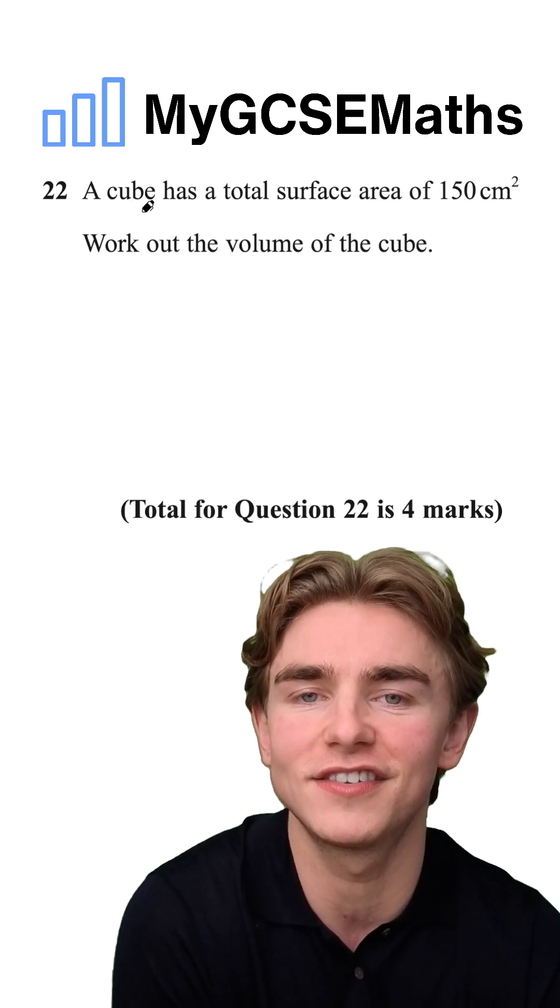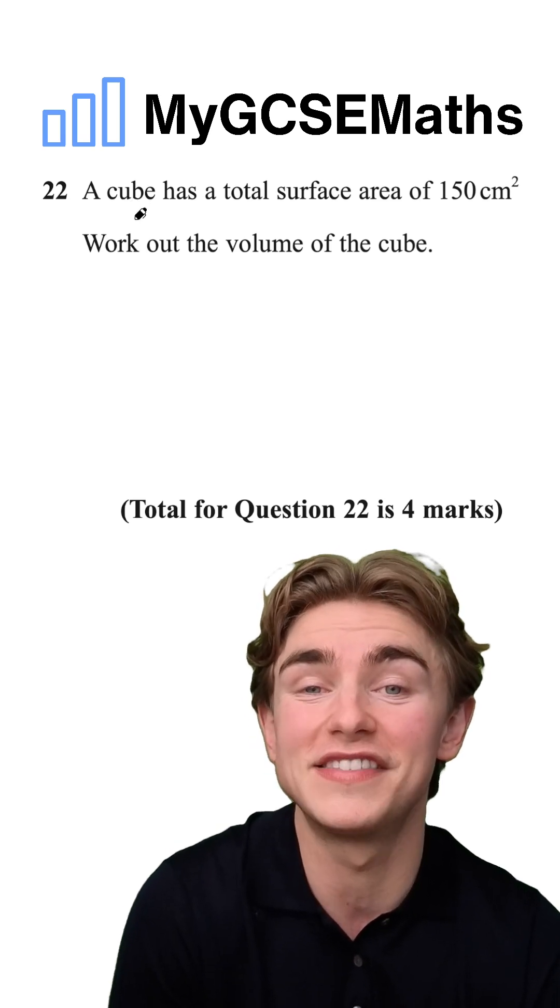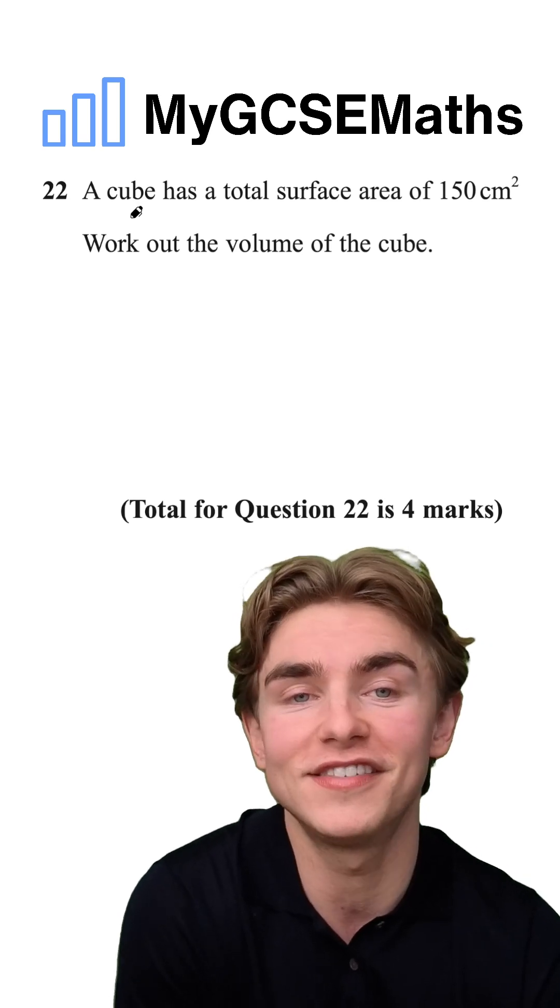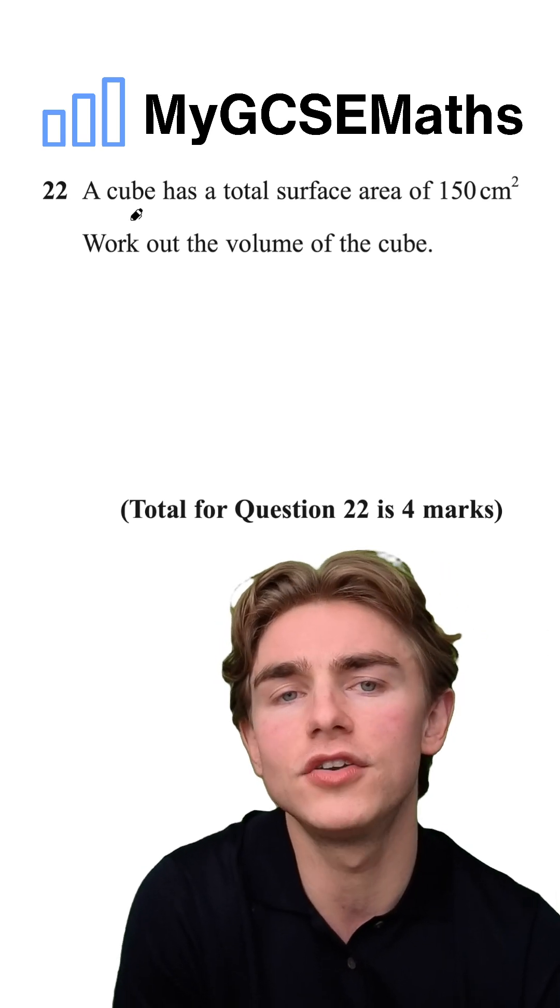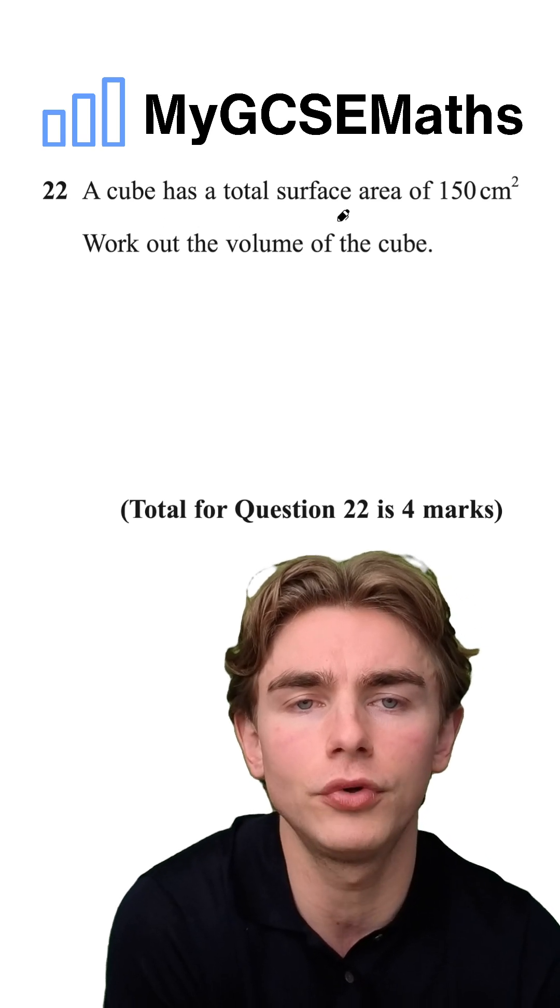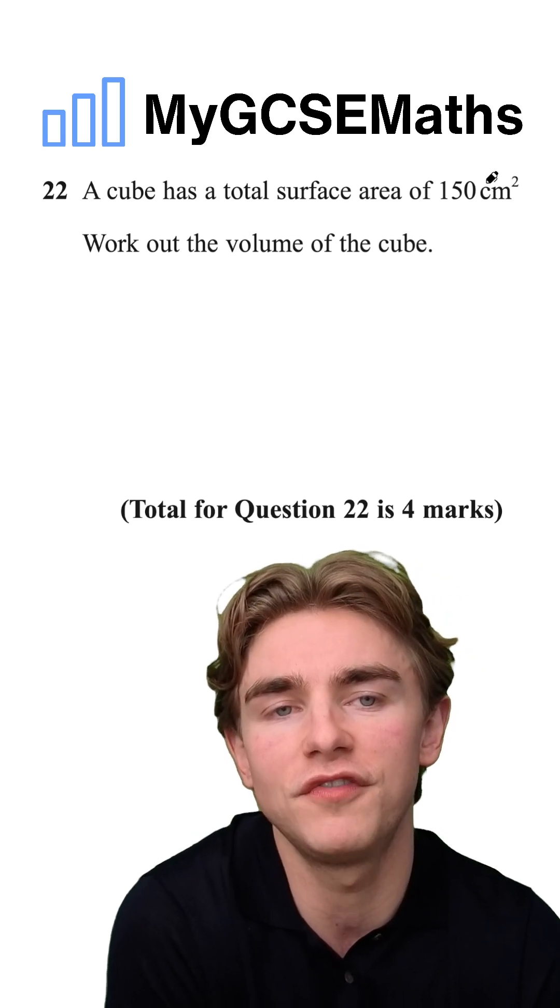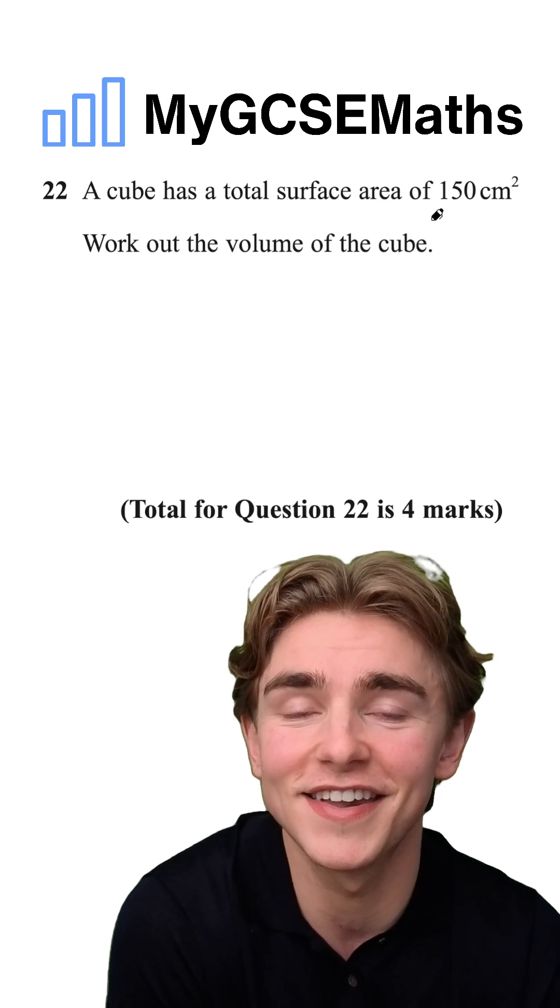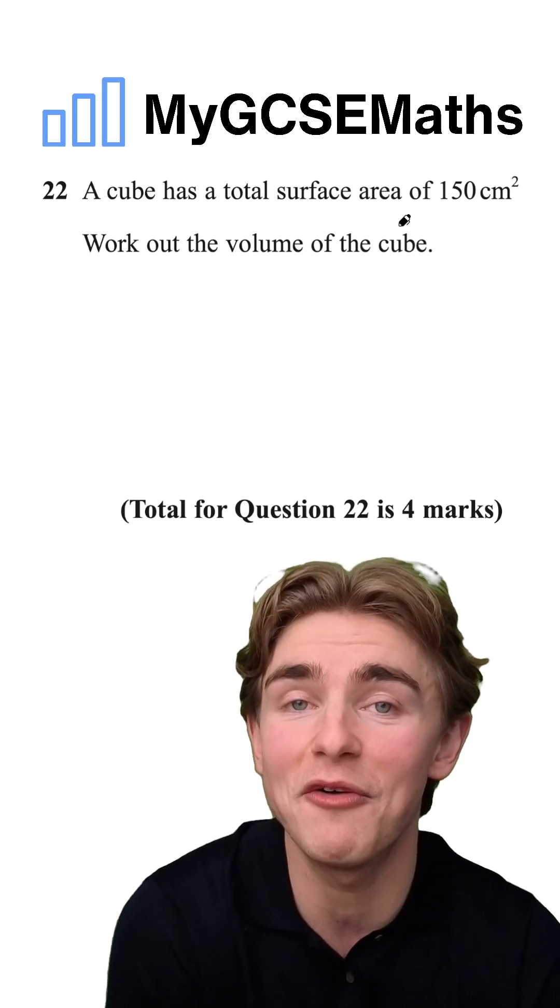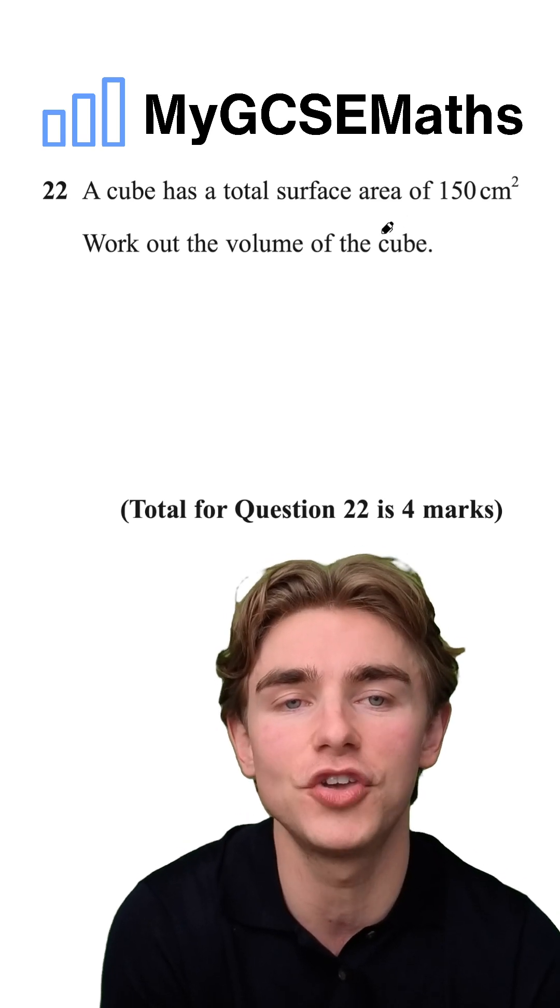Well, we know that a cube has six total faces. All of those faces are squares and they are all the same size. So what we can do is start off by doing our total surface area of 150 divided by six. And that is going to work out the area of one of the faces of the cube.